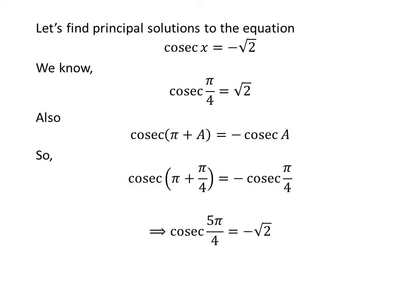Since π + π/4 equals 5π/4, and plugging in the value of cosecant of π/4 gives us cosecant of 5π/4 is equal to minus √2.